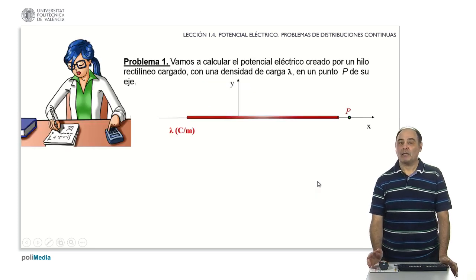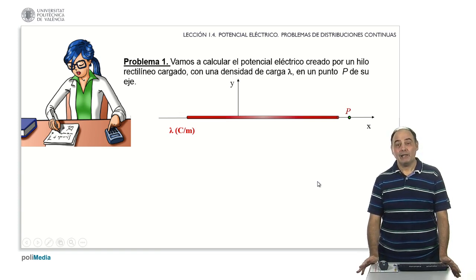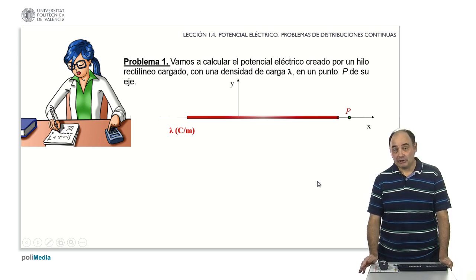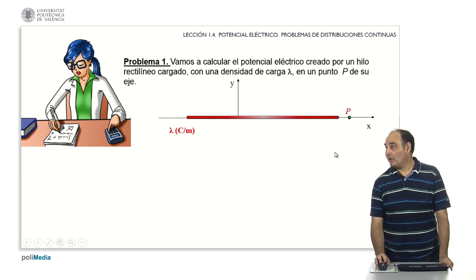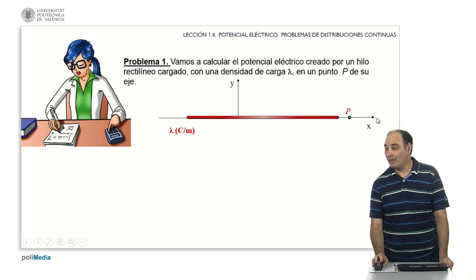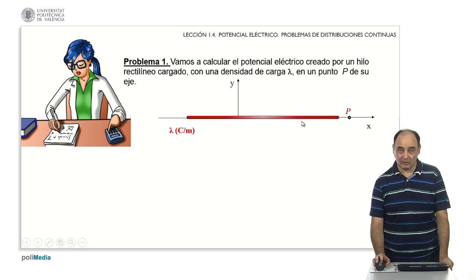The first practical exercise that we are going to perform is to calculate the electric potential created by a rectilinear wire charged with a constant charge density lambda at a point p on its axis. It may seem a very concrete case, but I warn that for any other point in space that is not on the alignment itself, the calculation is much more complicated.